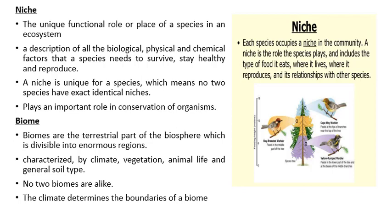Each species occupies a niche in the community. A niche is the role a species plays and includes the type of food it eats, where it lives, where it reproduces, and its relationships with other species. A niche is the unique functional role or place of a species in an ecosystem. It is a description of all the biological, physical, and chemical factors that a species needs to survive, stay healthy, and reproduce. This is unique for each species, meaning no two species have exactly identical niches. Niche plays an important role in conservation of organisms.